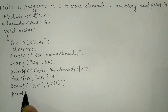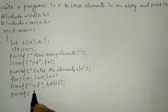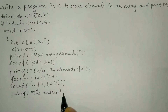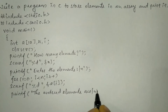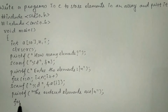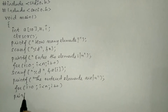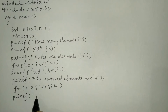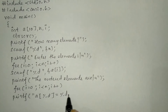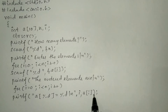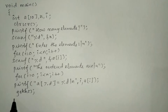Whatever element we have received from the user, we are going to print it onto the console. Using a printf statement we'll write 'the entered elements are' followed by backslash n and a semicolon. Once again we use the same for loop — for i equals zero, i is less than n, i plus plus — and a printf statement: 'a[%d] = %d' followed by backslash n, with i and a[i] as arguments. Then we write the getch function and the closing brace for the main function.